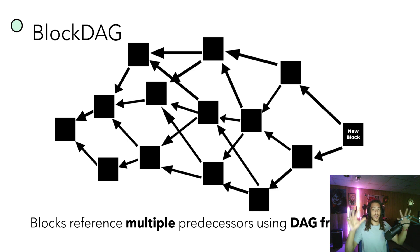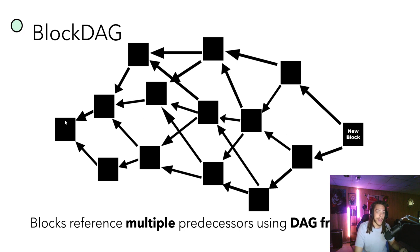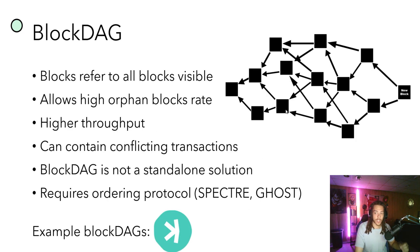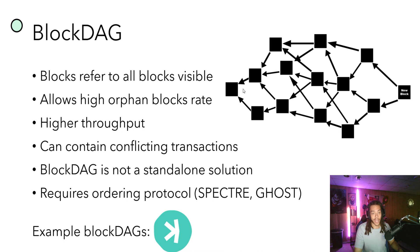Now we've looked at blockchain and DAGs — combining the two gives us a BlockDAG structure. Blocks reference multiple predecessors using this BlockDAG framework. Going left to right, the rightmost block is the newest and the leftmost is the genesis block. It has the structure of blockchain blocks but operates within a DAG framework. BlockDAGs refer to all blocks visible to them — for example, a block in the middle might reference three surrounding blocks, but not blocks far away; visibility is limited to what's within the miner's range.